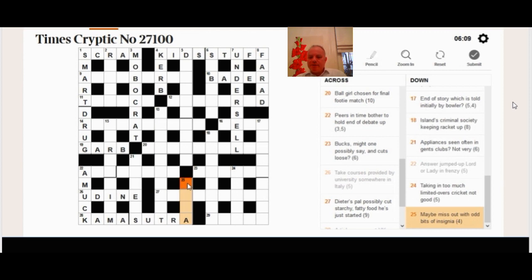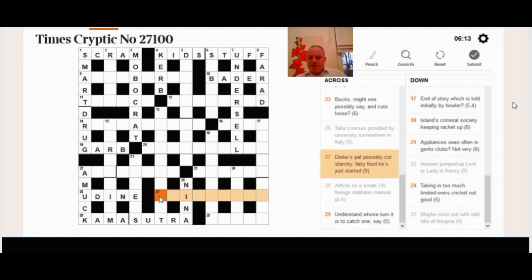Now, maybe miss out with odd bits of insignia. So out with is the instruction. They removed the odd bits, the odd-numbered letters in insignia. And you're left with Nina, which is defined as maybe miss, because it could be a woman.